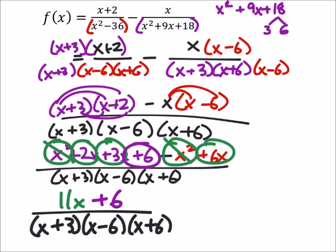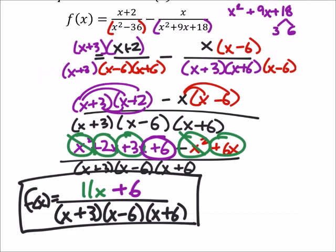Looking at this one, it does not look like I can factor anything out from that numerator. So that's our function right there. That's about as simplified as it gets. Now, I will warn you guys on the homework, I would expect something to factor out. Meaning that 11x plus 6 probably should be factorable.